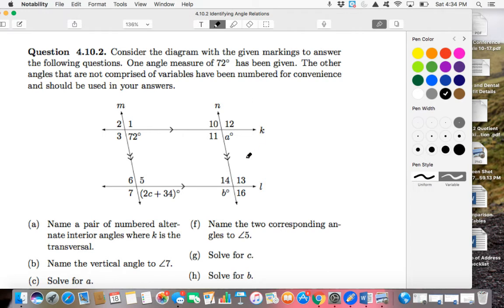Consider the diagram with the given markings to answer the following questions. Here we have all of our relationships. One angle measure of 72 degrees has been given. The other angles that are not comprised of variables have numbers for convenience and should be used in your answers.